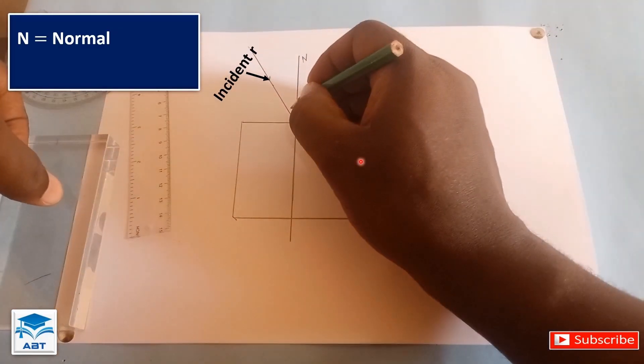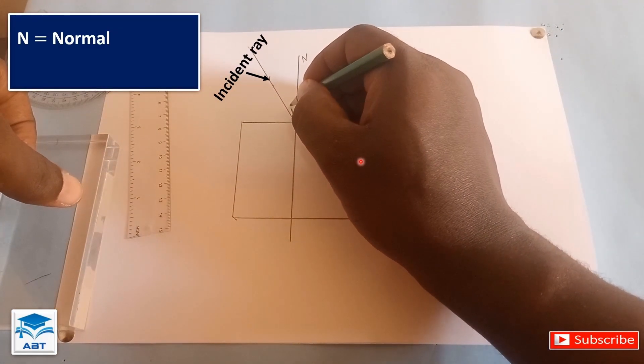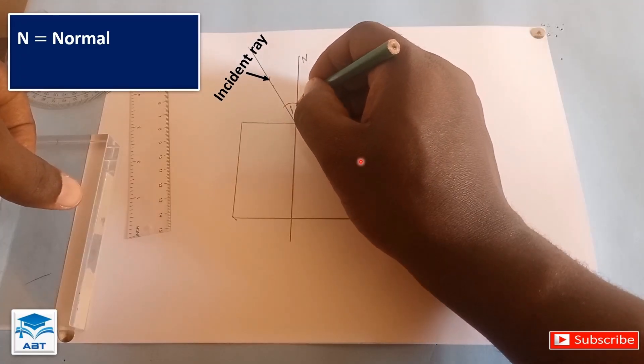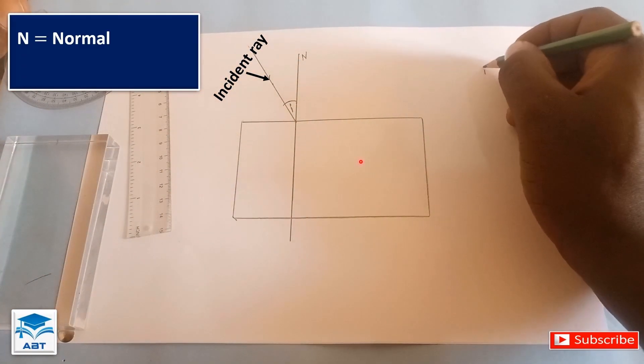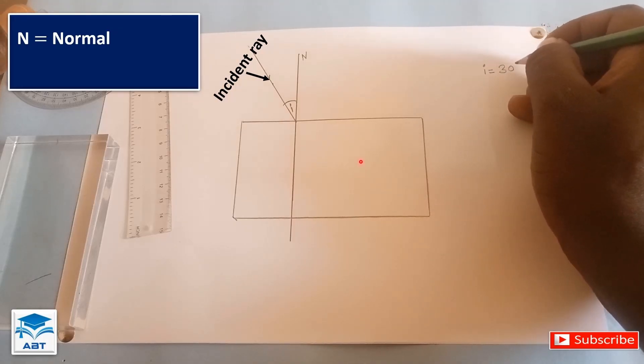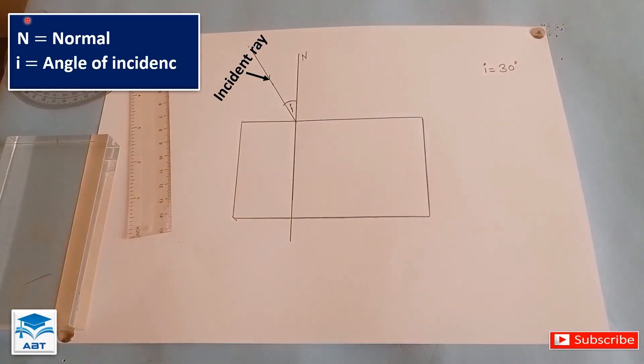This line is known as the incident ray. And the angle of incidence is 30 degrees. So I is the angle of incidence, and in this case it's 30 degrees.